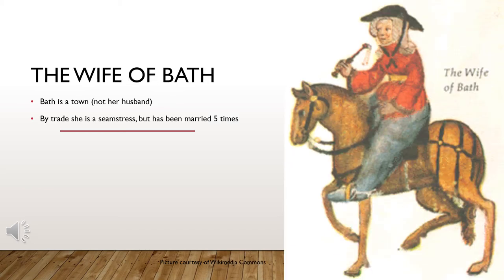Bath is a town on the River Avon, not the Wife of Bath's last name. Technically she's a seamstress, but she really makes her money by marrying people — she's been married five times and boasts about her numerous exploits in her youth. She isn't the quiet, demure lady of the court you'd expect from this time period. She's loud, likes nice clothes, and enjoys a good argument. She's described as deaf in one ear and having a gap between her teeth, which in Chaucer's time was considered very attractive.